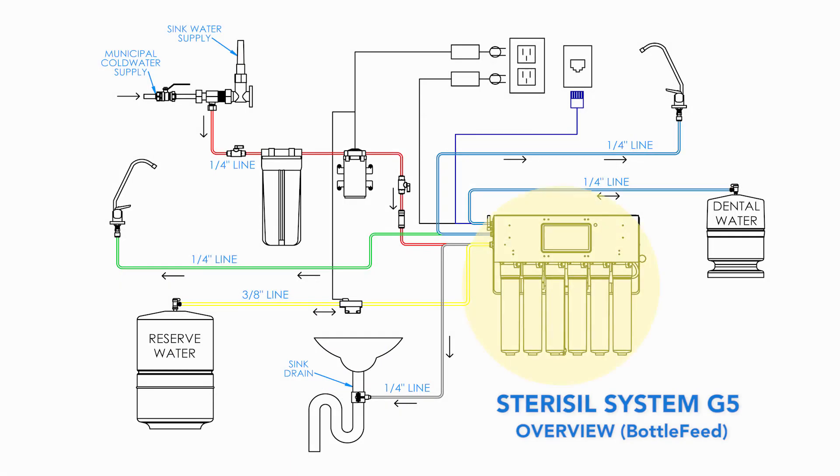In this section, we'll go over mounting the system, optional pre-filter, optional booster pump, water storage tanks, power adapter, and faucets. All external components like tanks, faucets, and drains should be positioned no more than 50 feet from the system to maintain consistent water pressure during use.